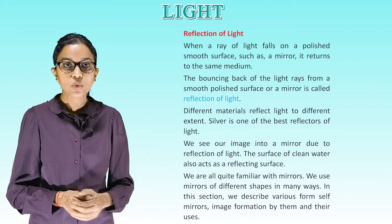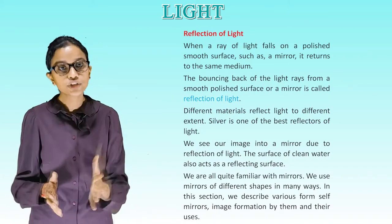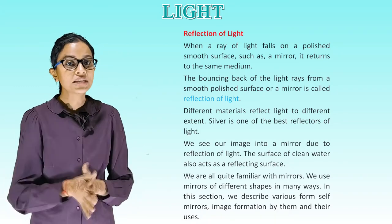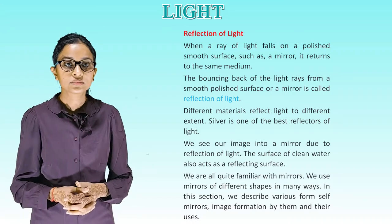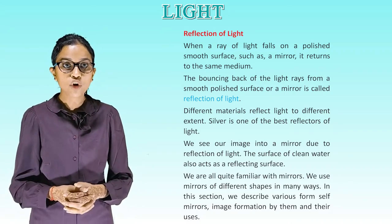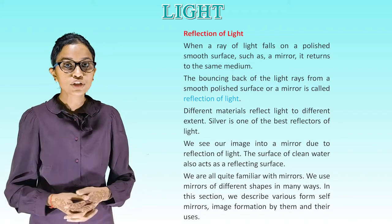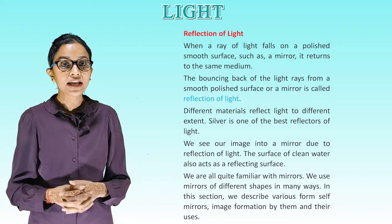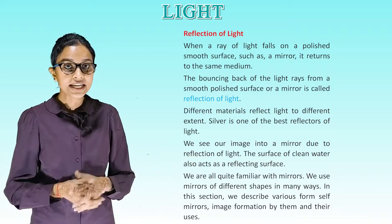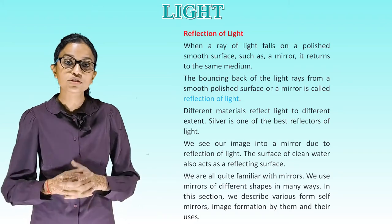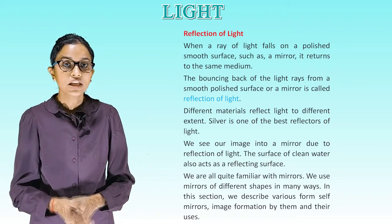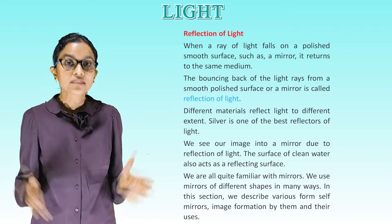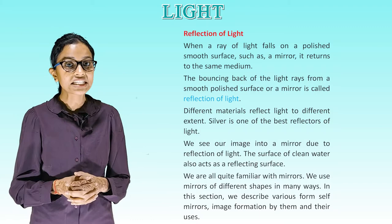Reflection of light: when a ray of light falls on a polished smooth surface such as a mirror, it returns to the same medium. The bouncing back of light rays from a smooth polished surface or a mirror is called reflection of light. Different materials reflect light to different extents. Silver is one of the best reflectors of light. We can see our image in a mirror due to reflection of light. The surface of clean water also acts as a reflecting surface.